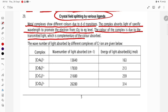The wave number of light absorbed by different complexes of chromium are given: [CrA6], [CrB6], [CrC6], [CrD6]. Here is the wave number of the light absorbed.